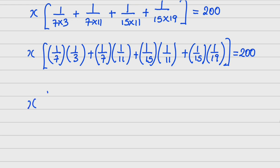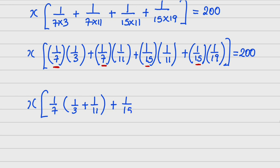The next step is to factorize further. I can see 1/7 appearing twice, so I factorize 1/7 out: 1/7 × (1/3 + 1/11). Then similarly, 1/15 appears twice, so I factorize 1/15 out: 1/15 × (1/11 + 1/19). So x times all of this equals 200.